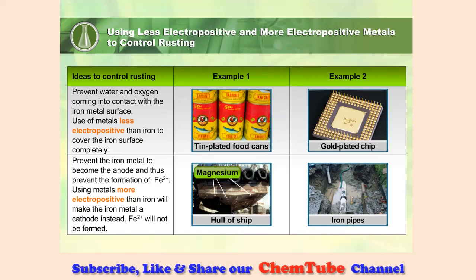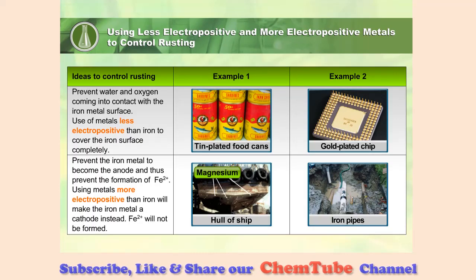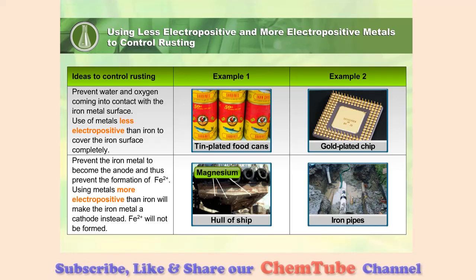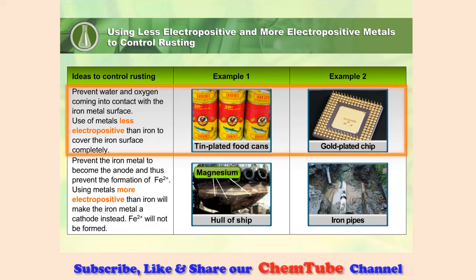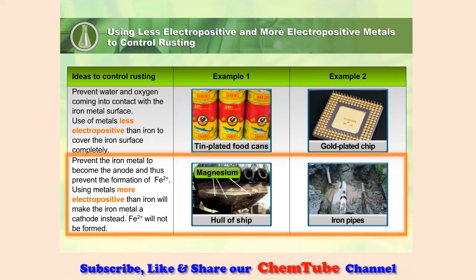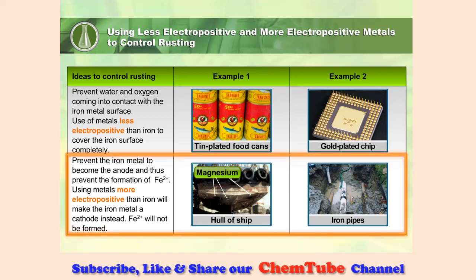Rusting, a form of metal corrosion involving iron, can be controlled by using less electropositive or more electropositive metals.